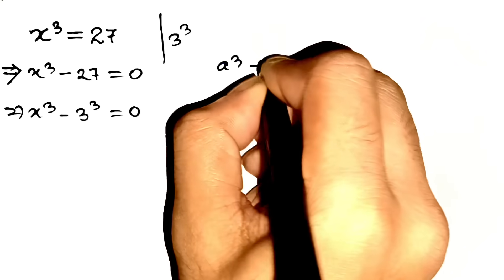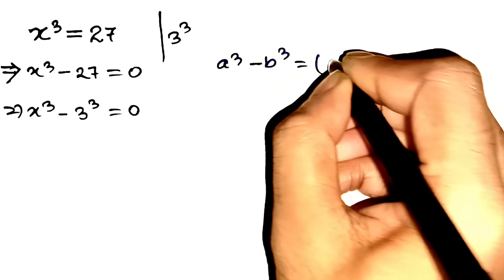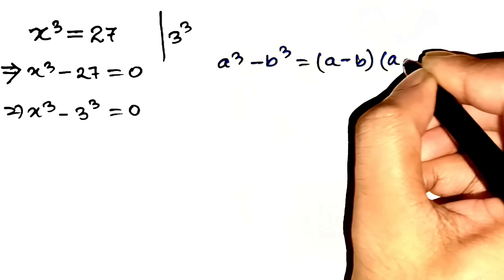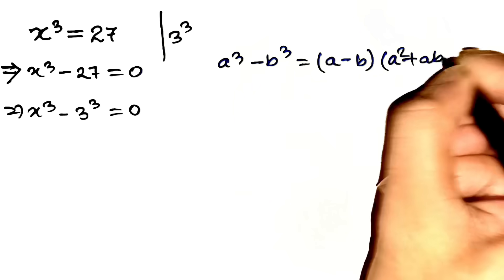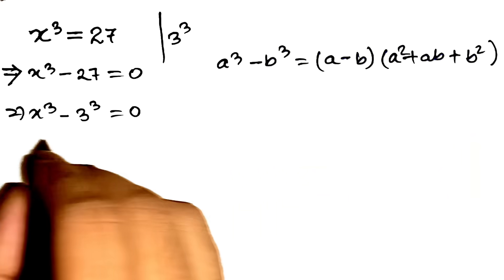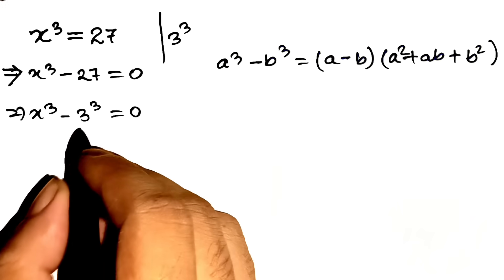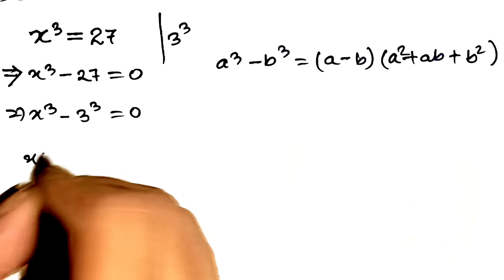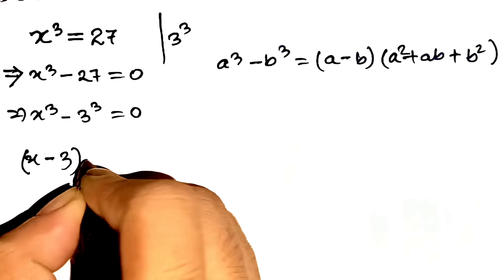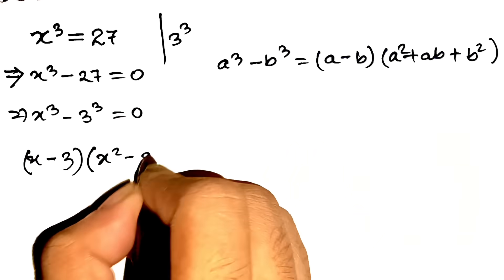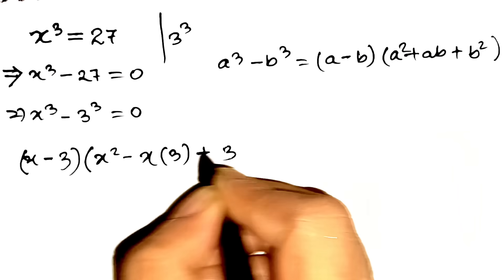The formula for a difference of cubes — a cubed minus b cubed — is open parentheses a minus b, close parentheses, times open parentheses a squared plus a times b plus b squared, close parentheses. Here, a is x and b is 3. Let's plug those in. x cubed minus 3 cubed becomes open parentheses x minus 3, close parentheses, times open parentheses x squared plus x times 3 plus 3 squared, close parentheses.